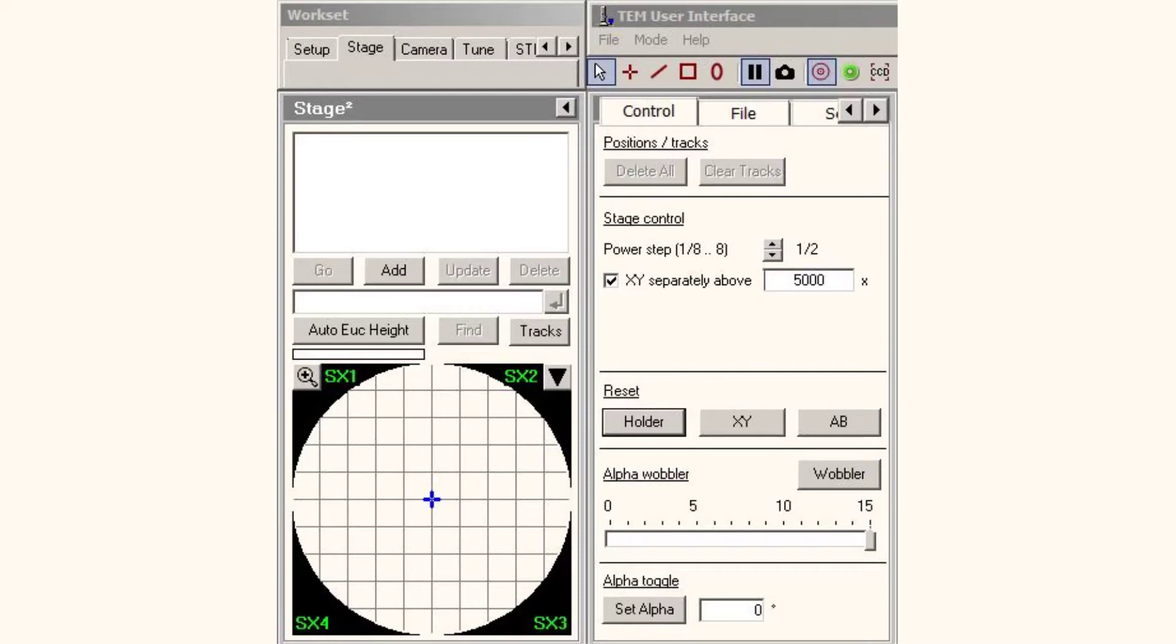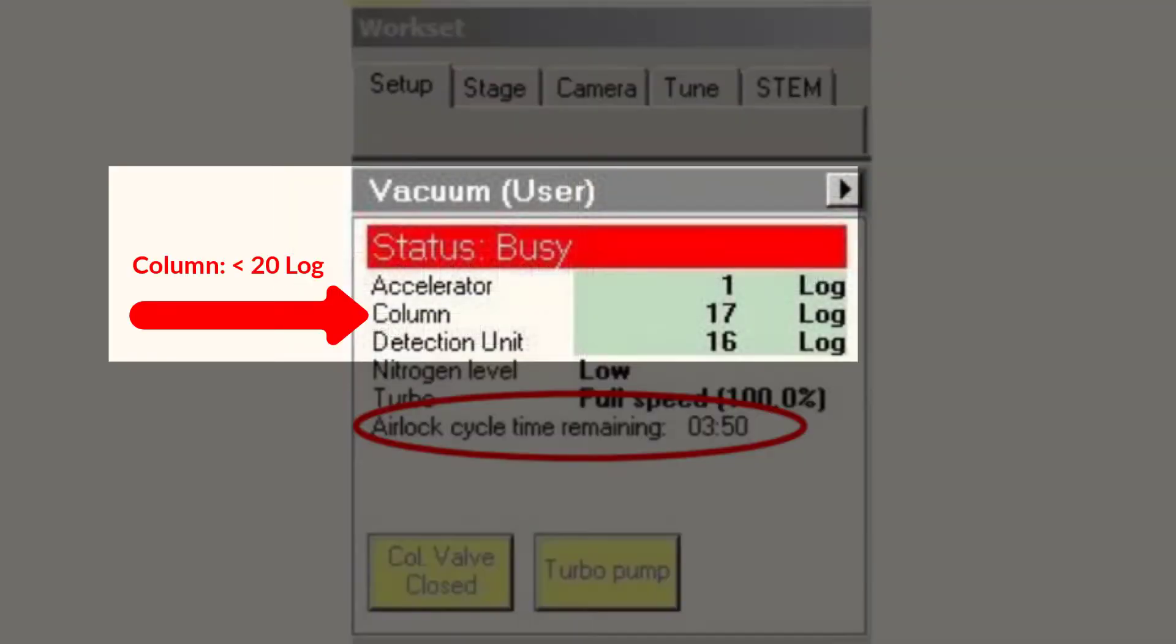Next, navigate to the Setup tab and check that the vacuum for the column is at 20 log or lower. This is critical. Opening the valves at pressures higher than this will lead to contamination of the field emission gun and shorten its lifetime.